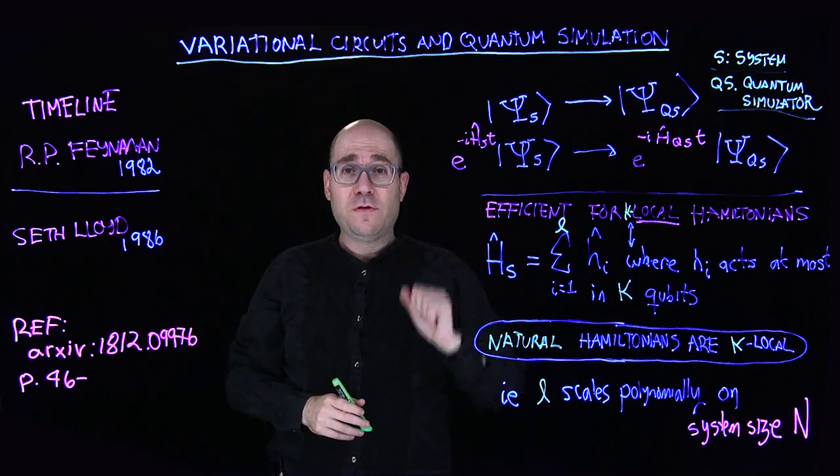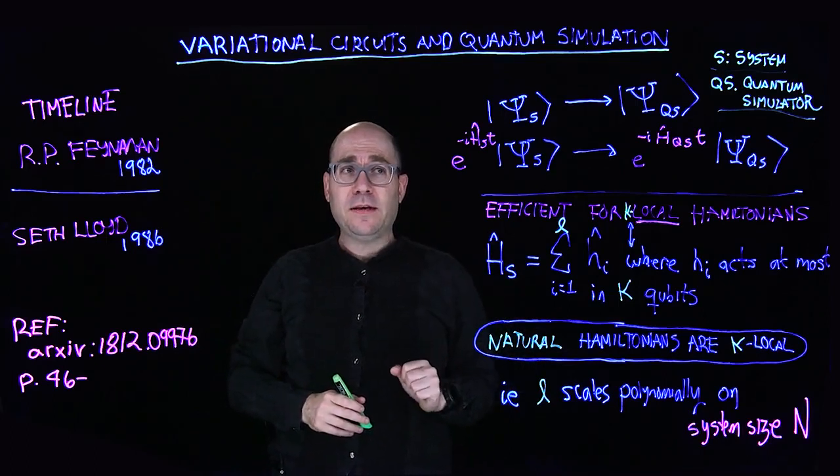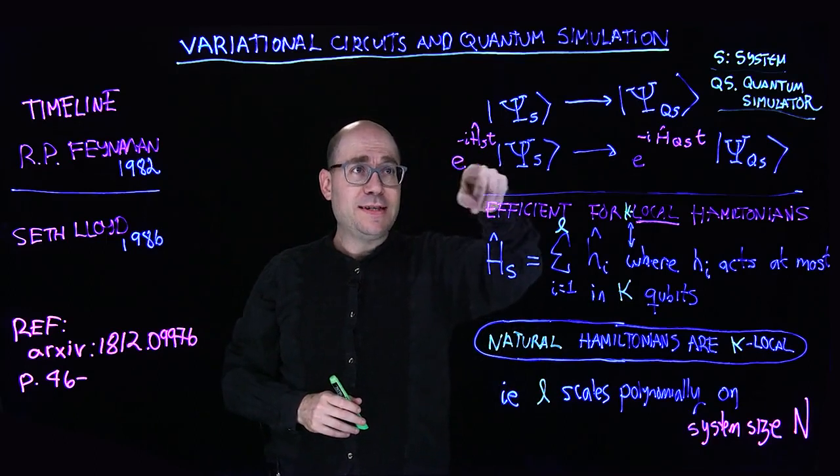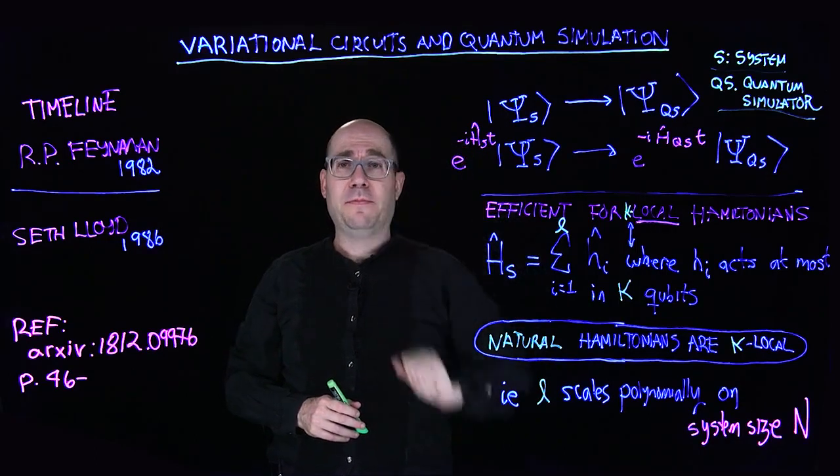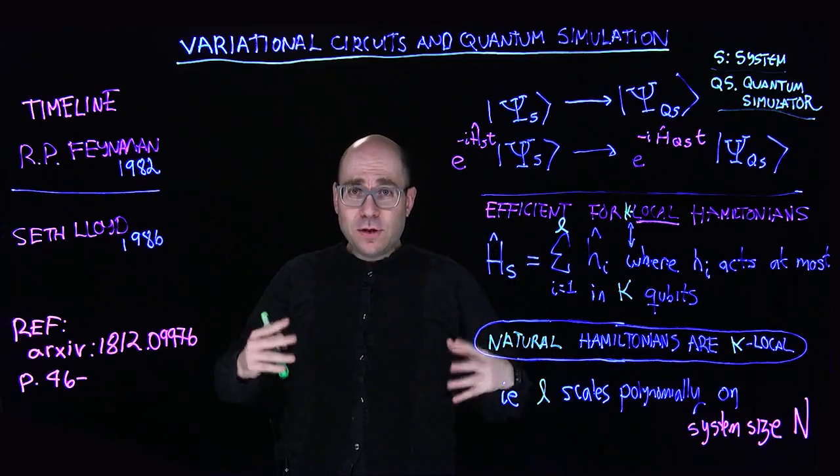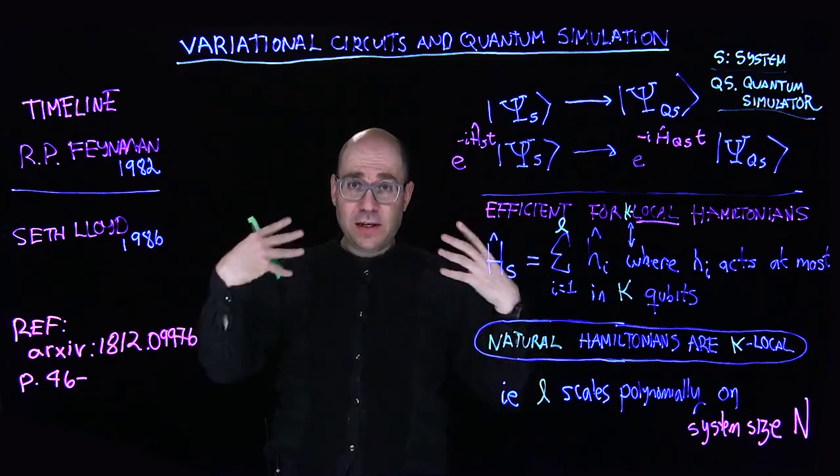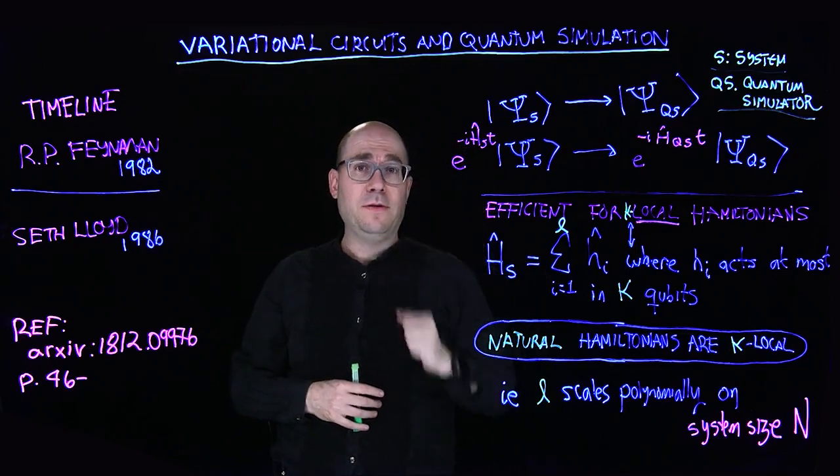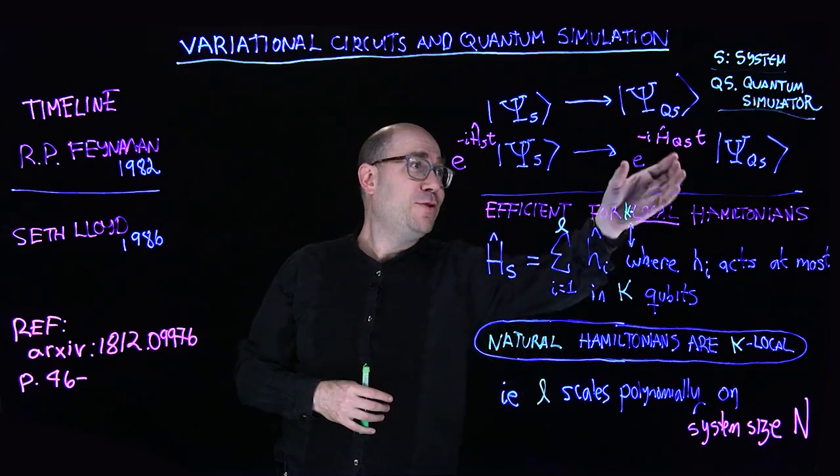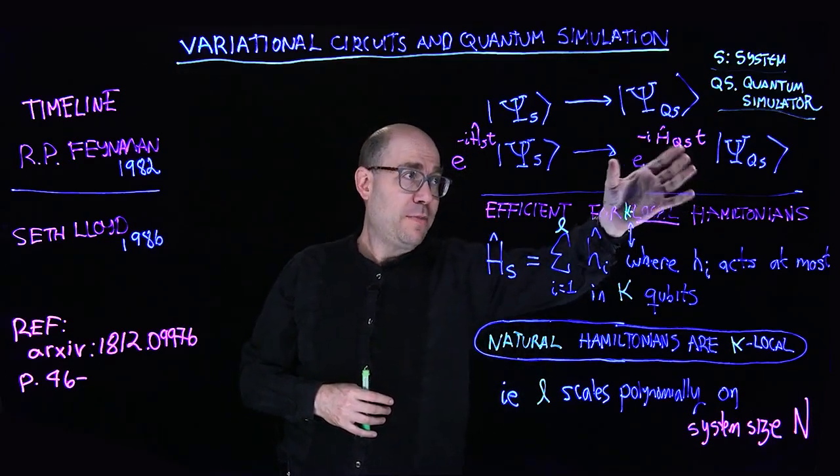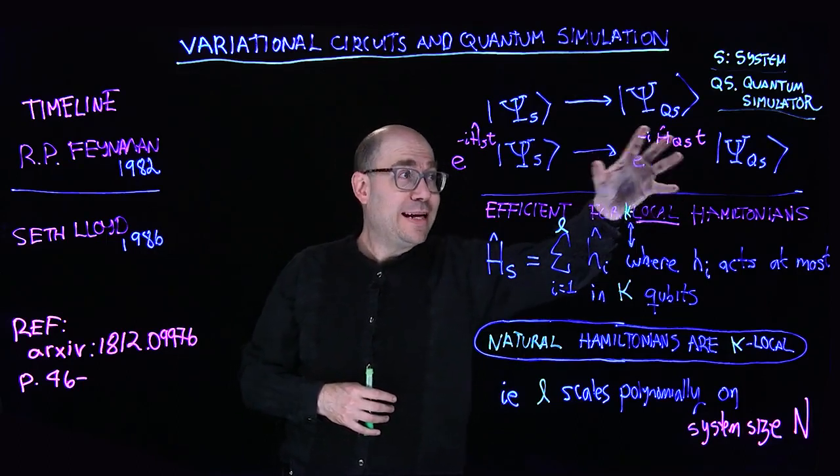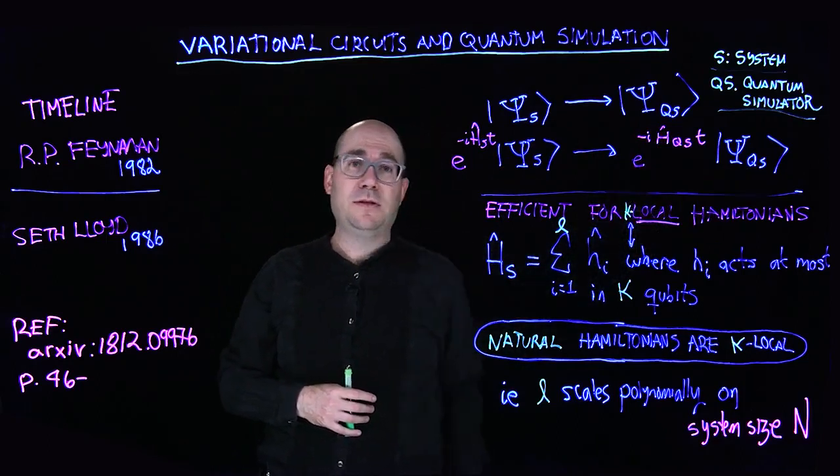The time evolution of the quantum system is determined by the unitary time evolution operator which is this imaginary exponential of the Hamiltonian times time. So you have this natural system that is evolving with this Hamiltonian evolution using this unitary time evolution operator that is mapped to this controllable Hamiltonian that might be different but it's meant to basically mimic the same dynamics on this quantum system.